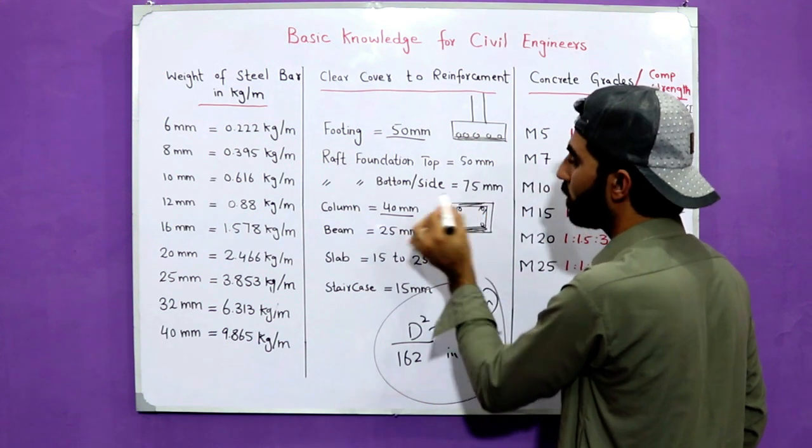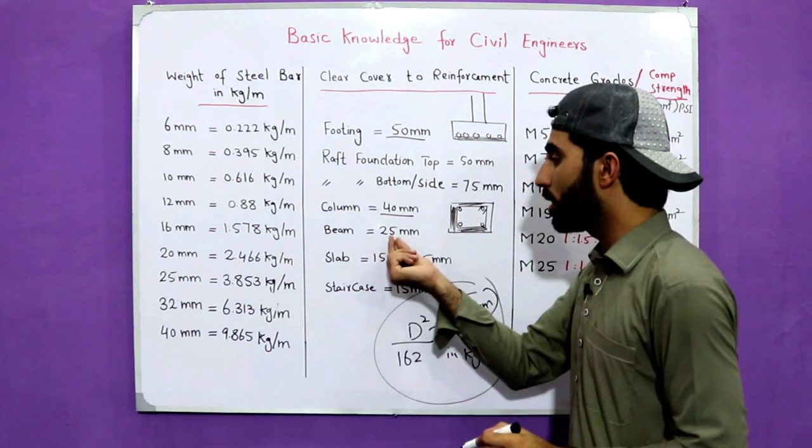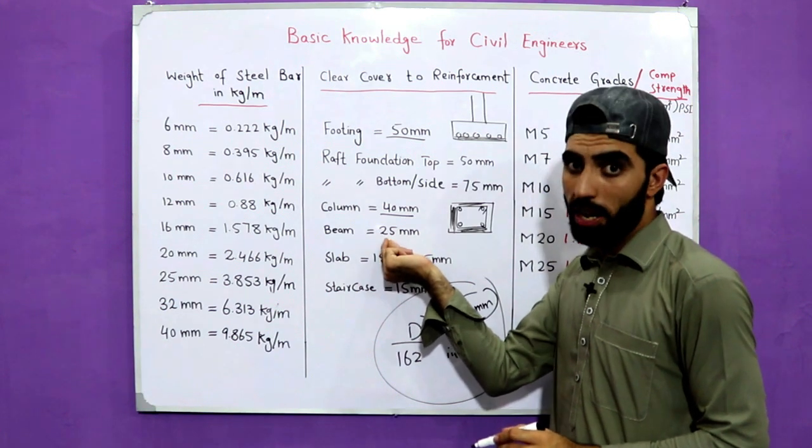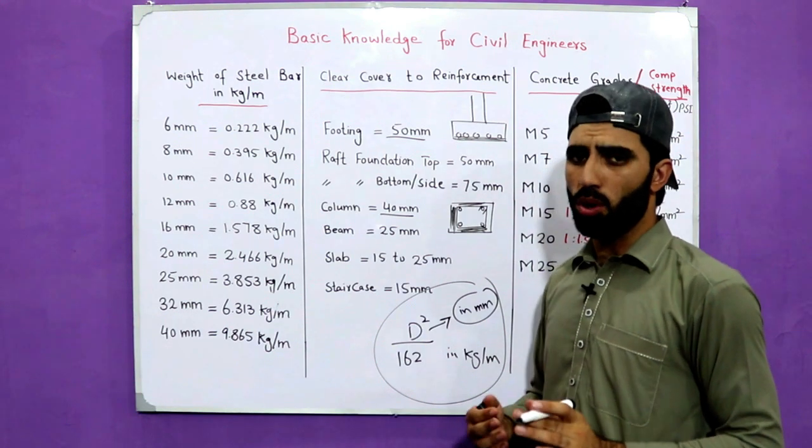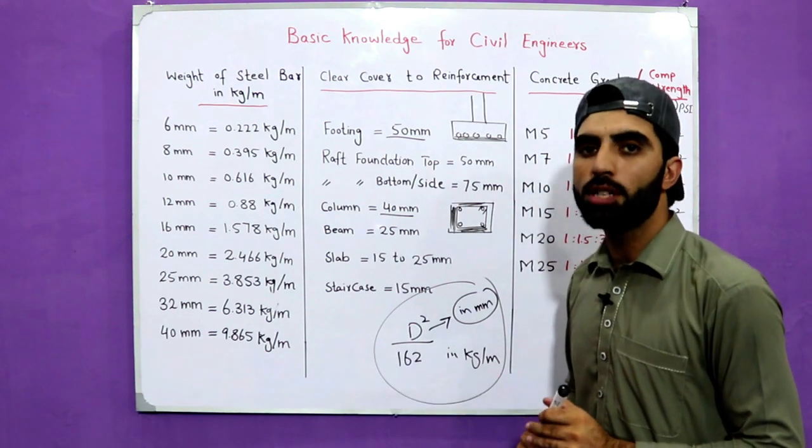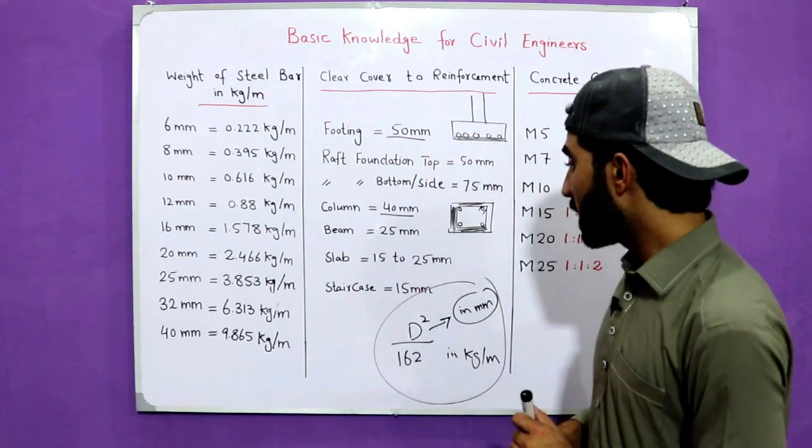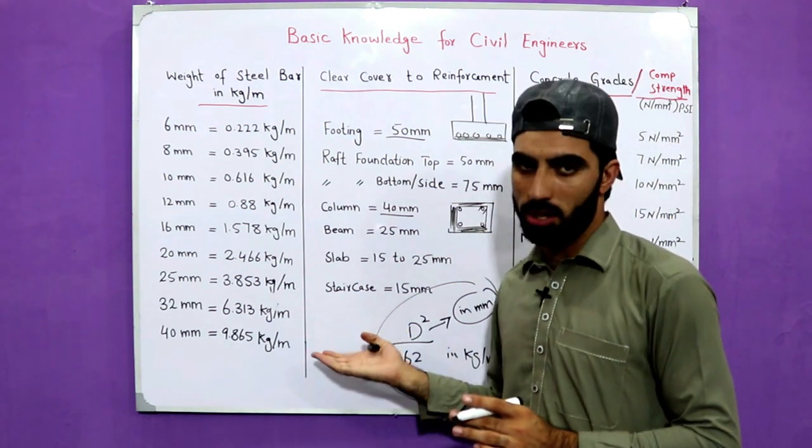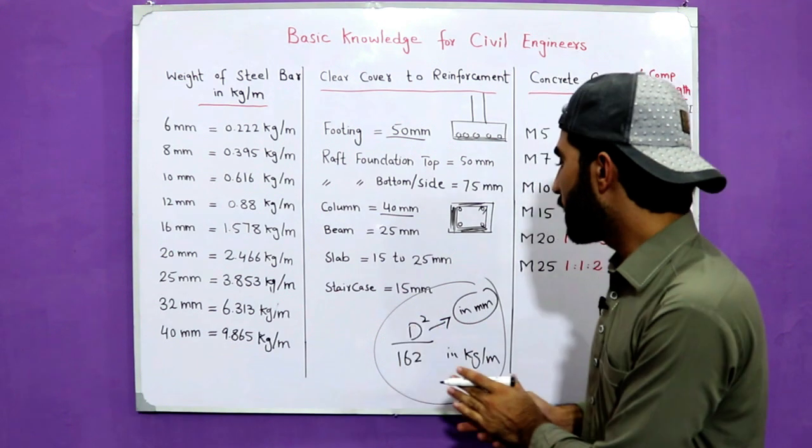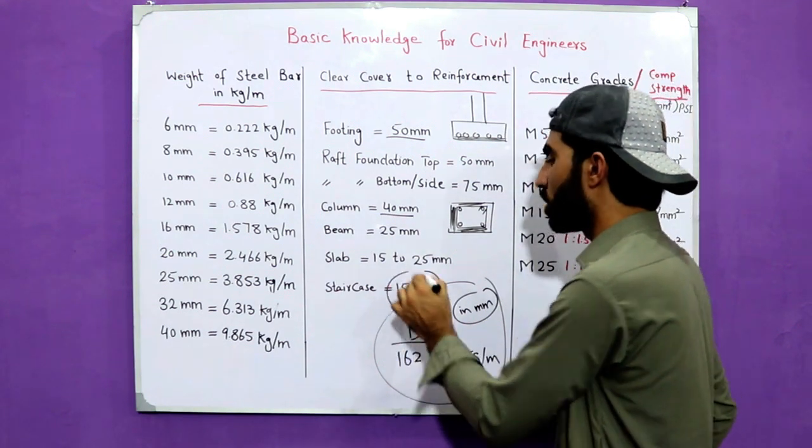For beam it should be 25mm, and for RCC slab from 15 to 25mm is okay but normally we provide 20mm. For staircase, especially in waist, that should be 15mm. These are concrete clear covers for main reinforcement.